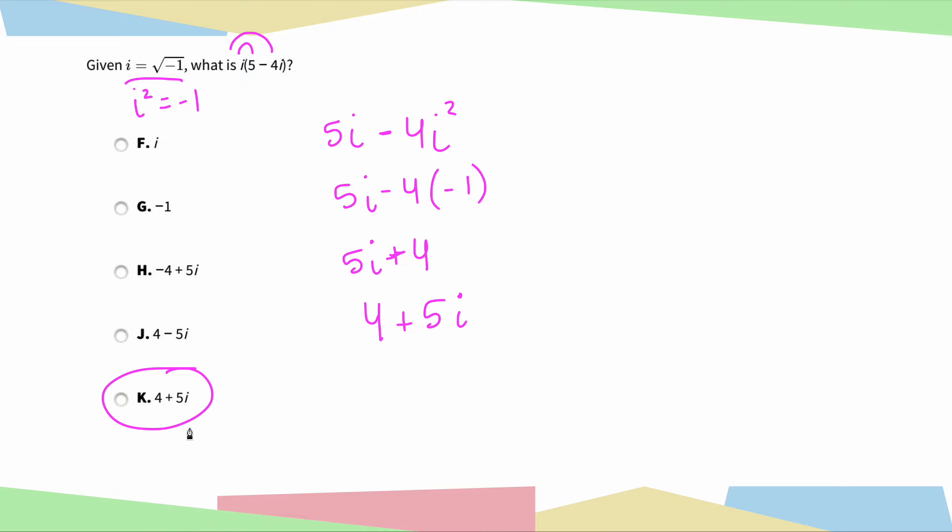We're going to look through our answer choices and note that the correct answer choice is K. Another thing to notice is from the beginning, we could have done some process of elimination here. Pretty much immediately, I know if I'm multiplying an i times an i, that's going to become my real part.